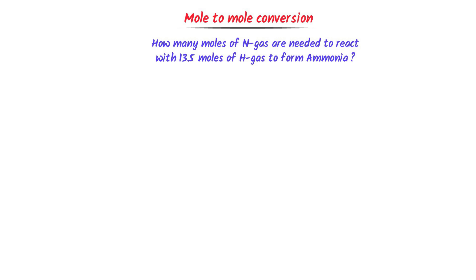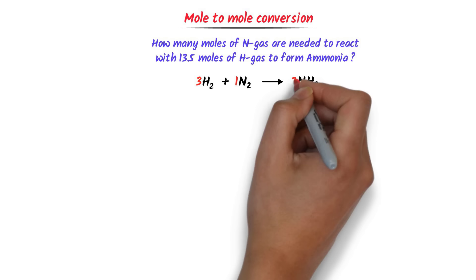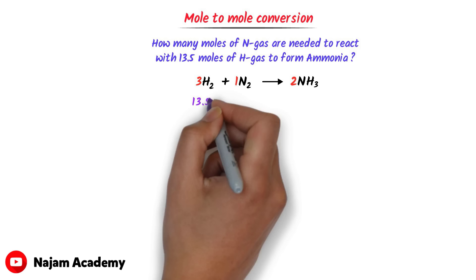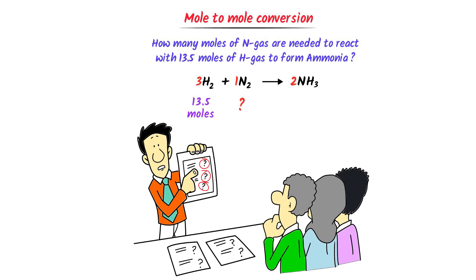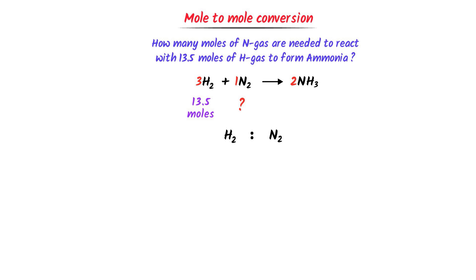I write the balanced chemical reaction: H₂ + N₂ → NH₃, with coefficients 3, 1, and 2. According to the given statement, 13.5 moles of hydrogen gas is given; we need to find the number of moles of nitrogen gas. I write the ratio of hydrogen to nitrogen gas, which is 3:1. We are given 13.5 moles of hydrogen, so if 3 moles of H₂ react with 1 mole of N₂, then 13.5 moles of H₂ react with x moles.